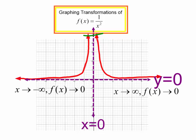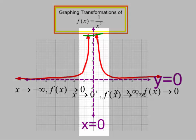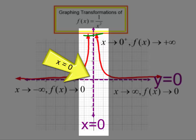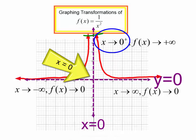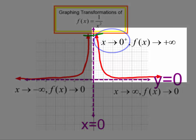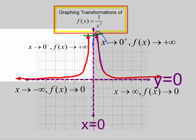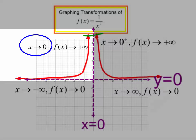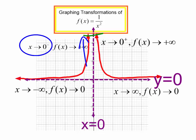What's happening in the middle of the graph? As my x's are approaching 0 from the right side, or from the positives, my f(x), the y's are getting bigger and bigger. And on the left side, as my x approaches 0 from the left, my y's are going up, up, up there also.